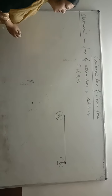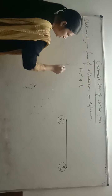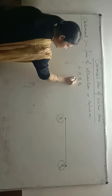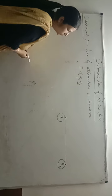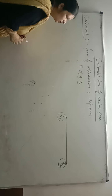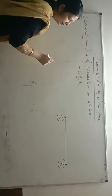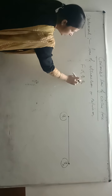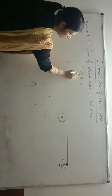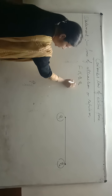F is directly proportional to Q1 times Q2. The greater the values of Q1 and Q2, the greater the force of attraction or repulsion. So F is directly proportional to Q1 Q2.